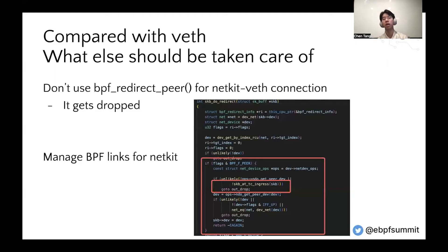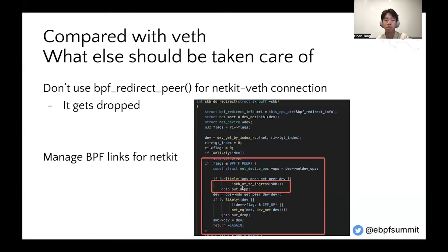Compared with veth, what else should be taken care of? First, we need compatibility between NetKit and veth. Don't use BPF redirect peer helper functions for NetKit with connections, because the packet will get dropped — the SKB is not at the TC ingress hook point. Second, we also need to manage BPF links for NetKit, because it's not attached to the TC hook point anymore. It needs BPF links for persistence, and we also need to recycle the BPF links once we want to destroy the NetKit device or detach the eBPF.